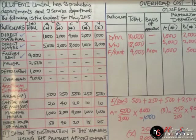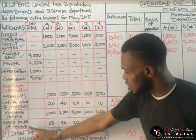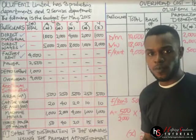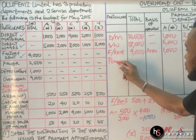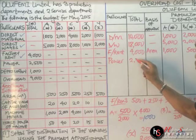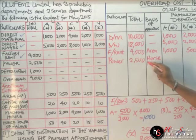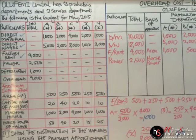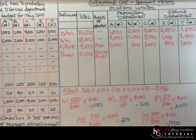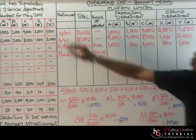The next item is power. To apportion power, we use the horse power of machine. The total for power is 2,500, and we write 'horse power' as the basis. Please copy the working we've done so far — pause the video if needed — and we'll continue with the same apportionment process.